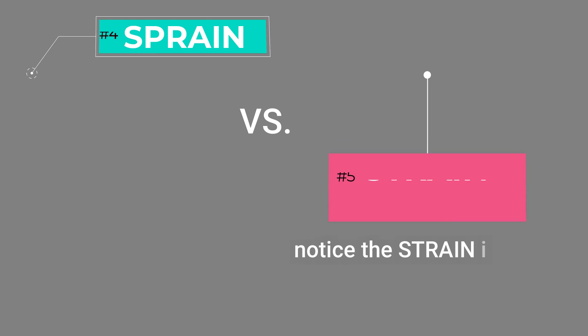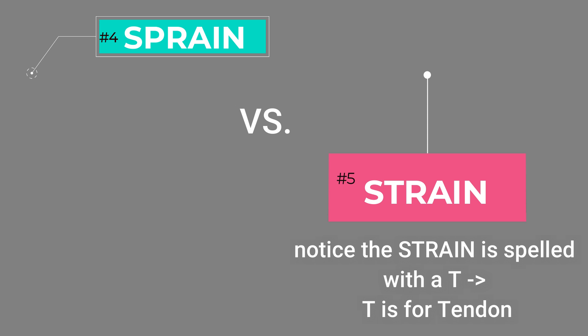Our fourth and fifth definitions can be a little challenging — we are talking about strains and sprains. A sprain is a stretch or tear to a ligament. A strain is a stretch or tear to a tendon or muscle. A great way to remember this: strain starts with ST, and ST goes with tendon — think about the T in strain, think tendon. Comment below if you have other ways to remember these definitions to help your fellow nursing students.